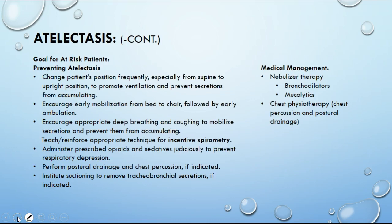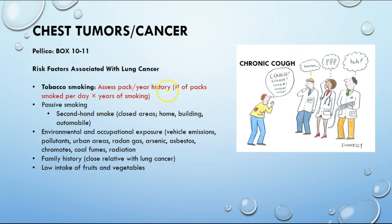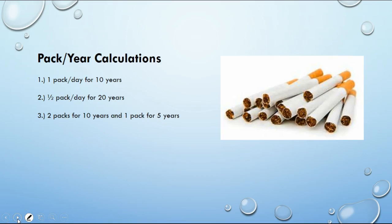Risk factors for lung cancer include chest tumors and smoking history. Smoking doesn't guarantee lung cancer, but you need to know how to calculate pack-year history. Examples: one pack for 10 years = 10 pack-years; half a pack for 20 years = 10 pack-years; two packs for 10 years = 20 pack-years; one pack for five years = 5 pack-years.